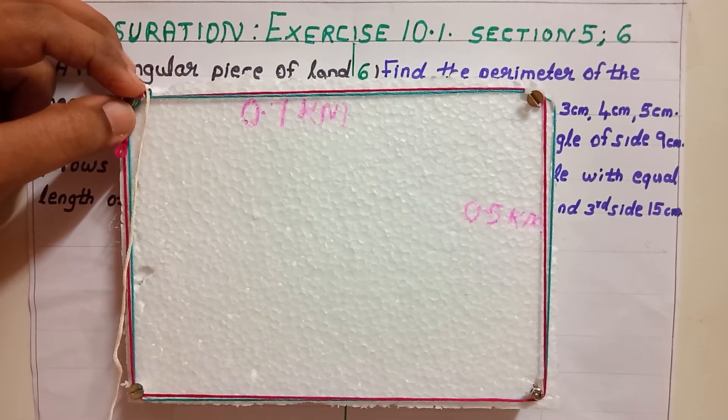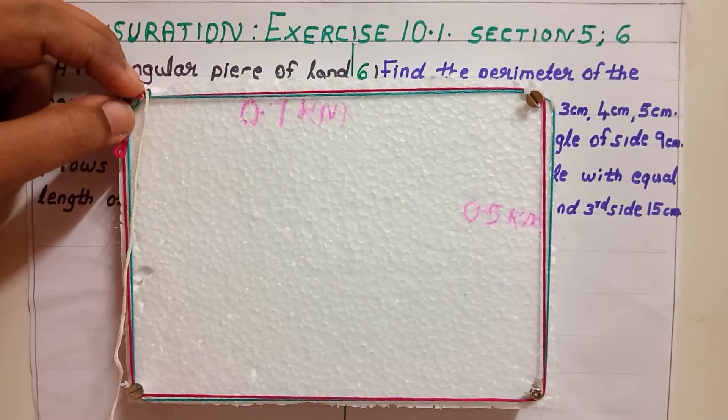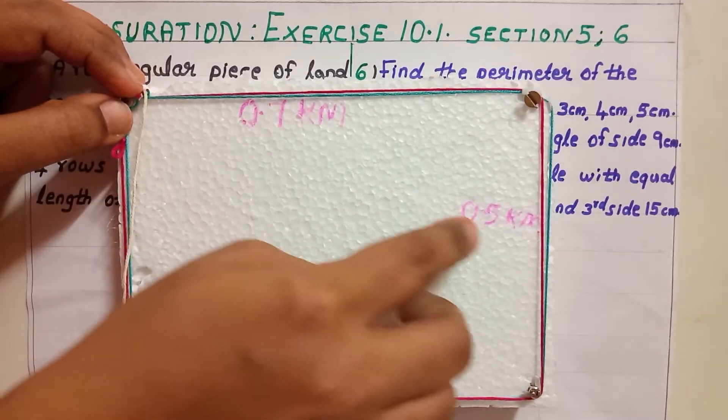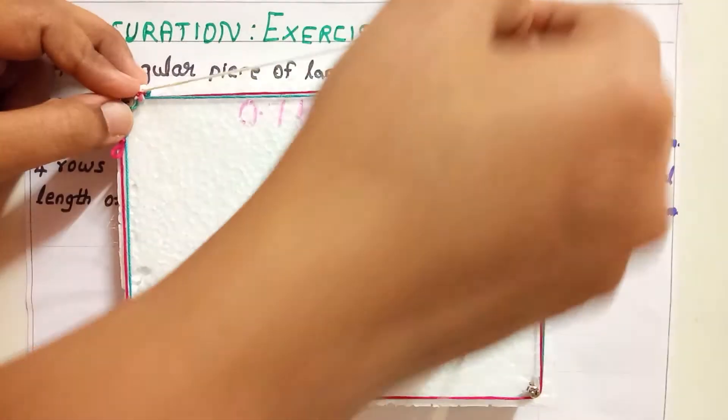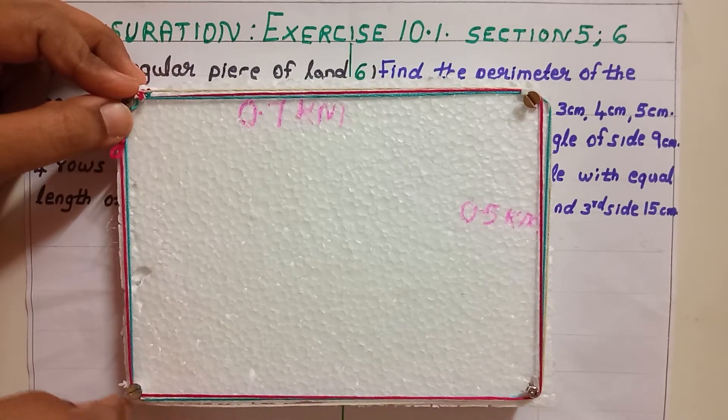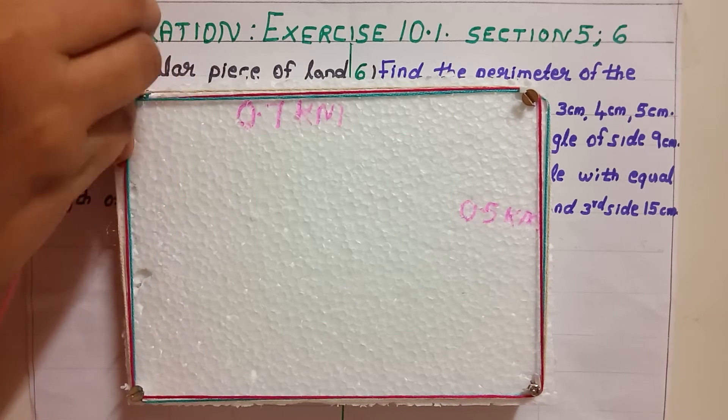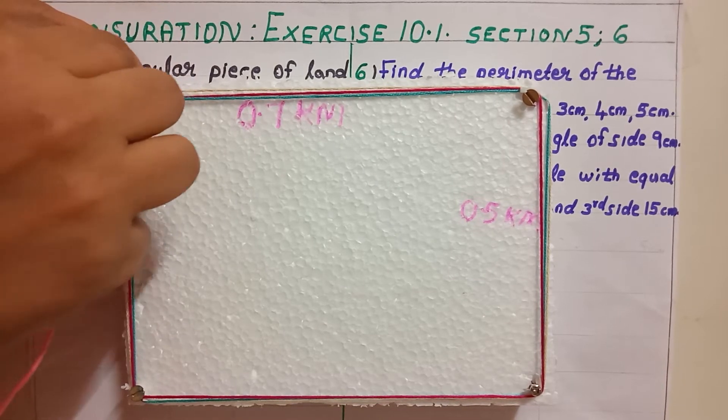So, this will give you again by the formula 2 into L plus B. That means 2 into 0.7 plus 0.5. Then again, third color, cream color thread. This is over. Again, we can do it as the same.